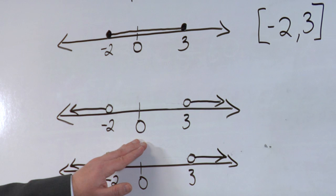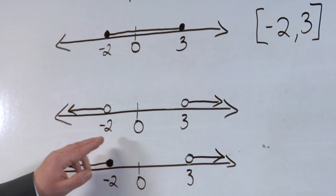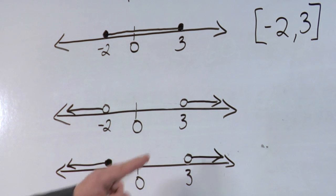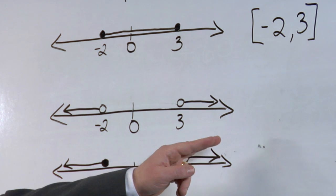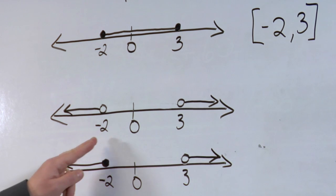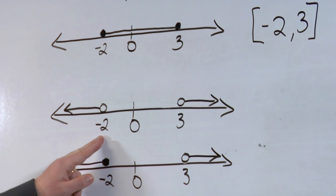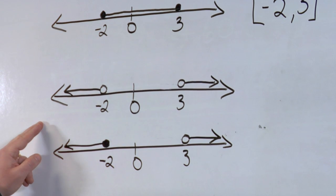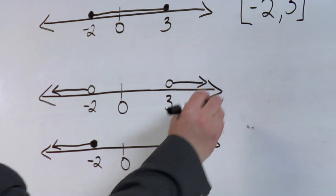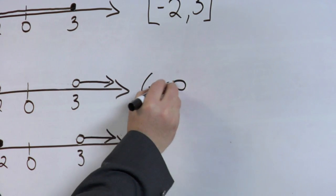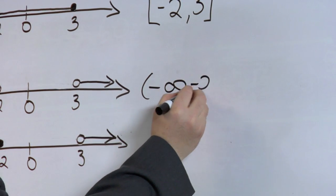The second example, we do not include the endpoints. And notice this time, the points are going in opposite directions. Since the point is going from negative 2 and the graph continues all the way to the left, it's going toward negative infinity. But we cannot ever include negative infinity.